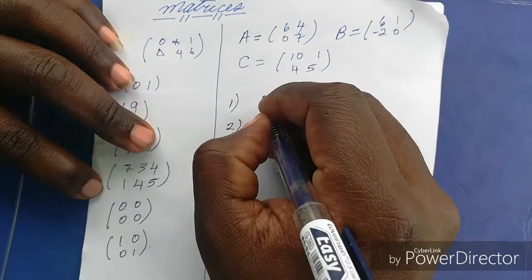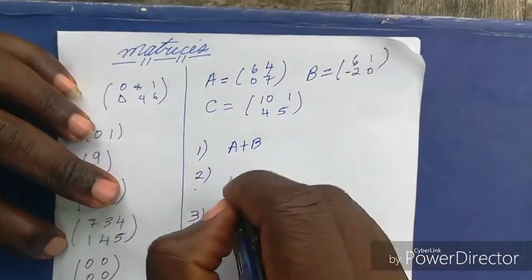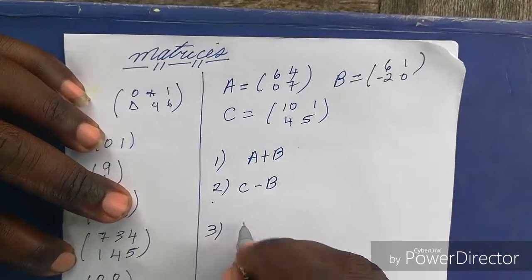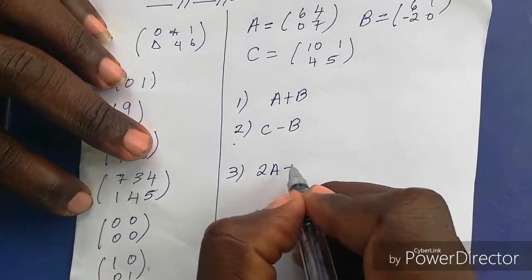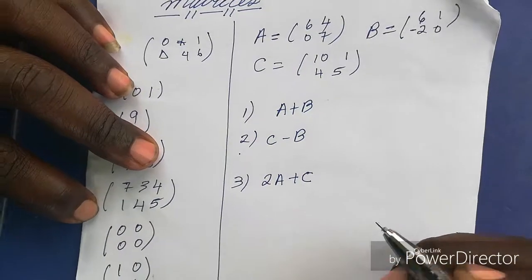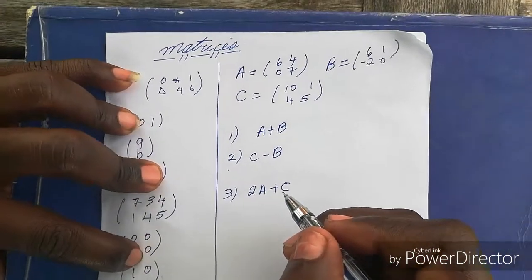So let's say they ask us to do A plus B, C minus B, and let's say they want something as crazy as 2A plus C.